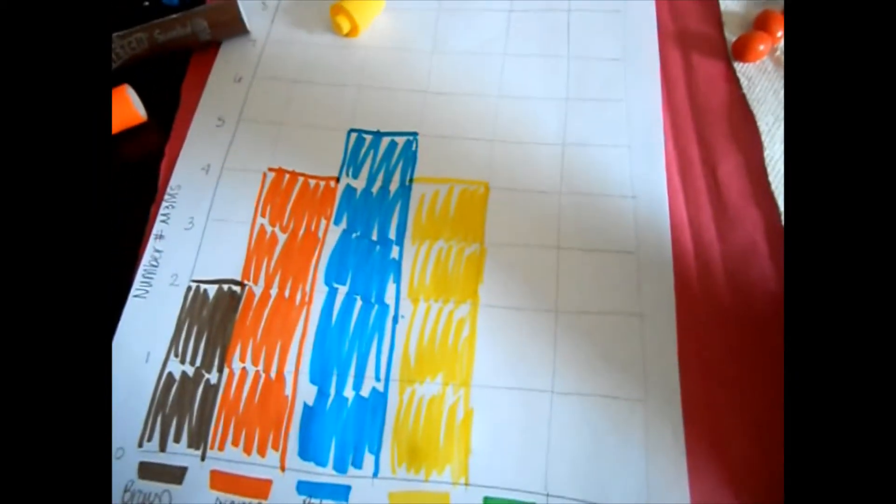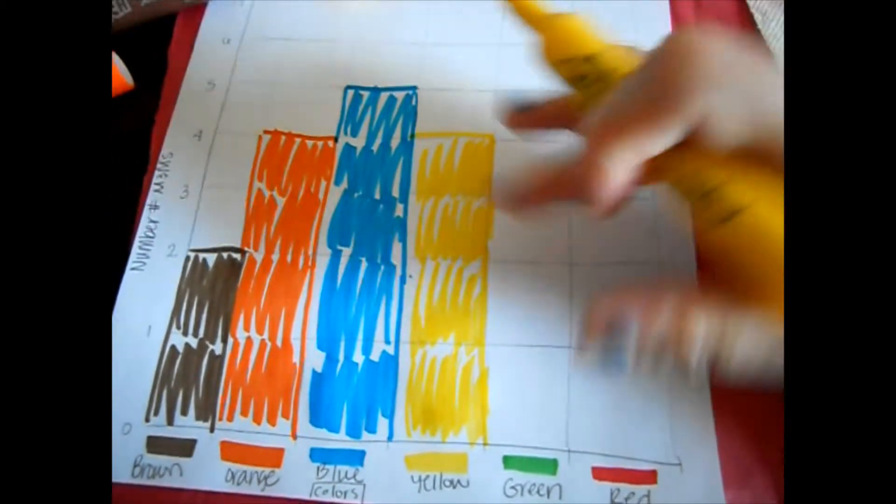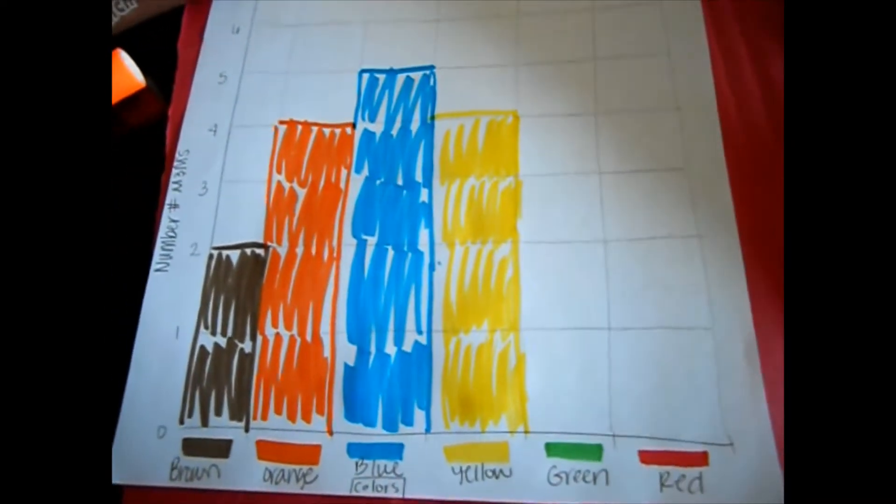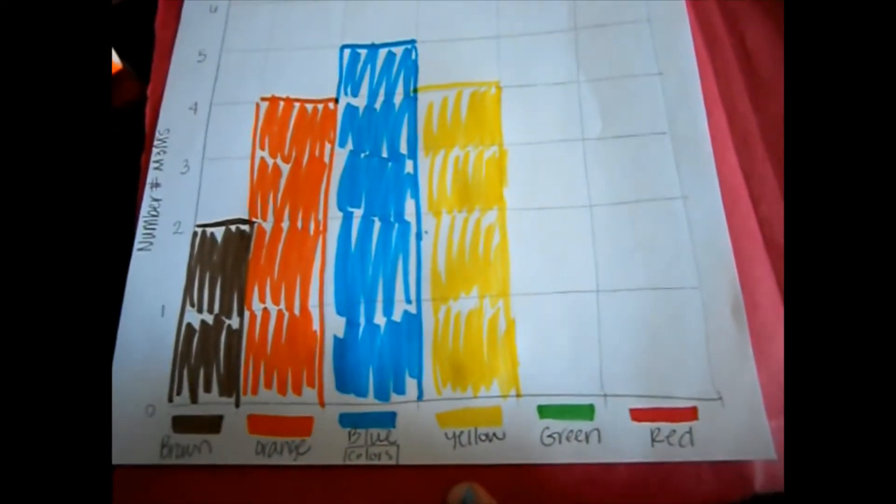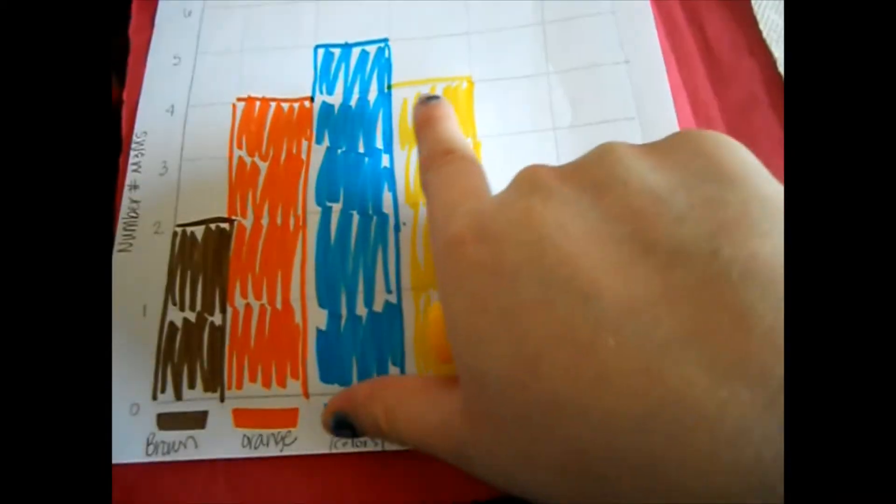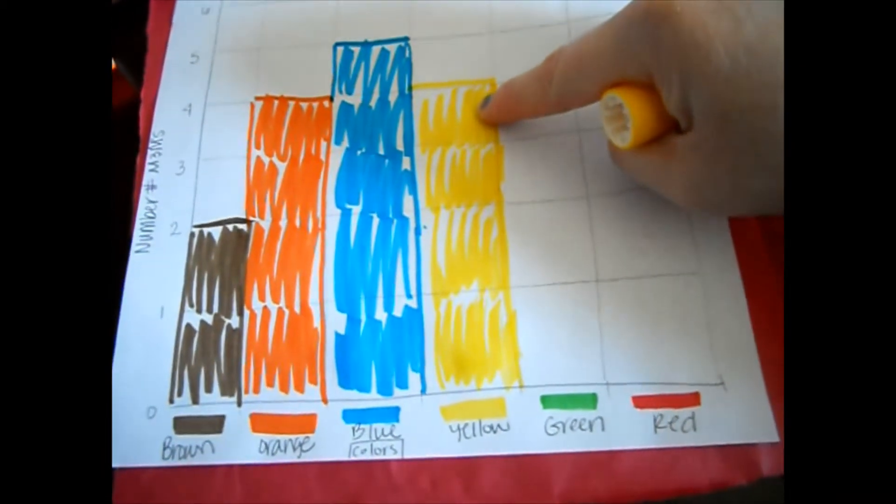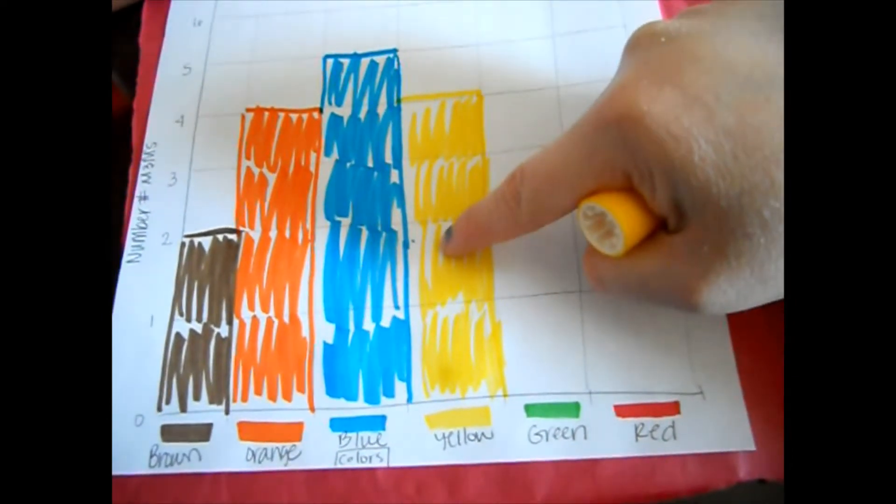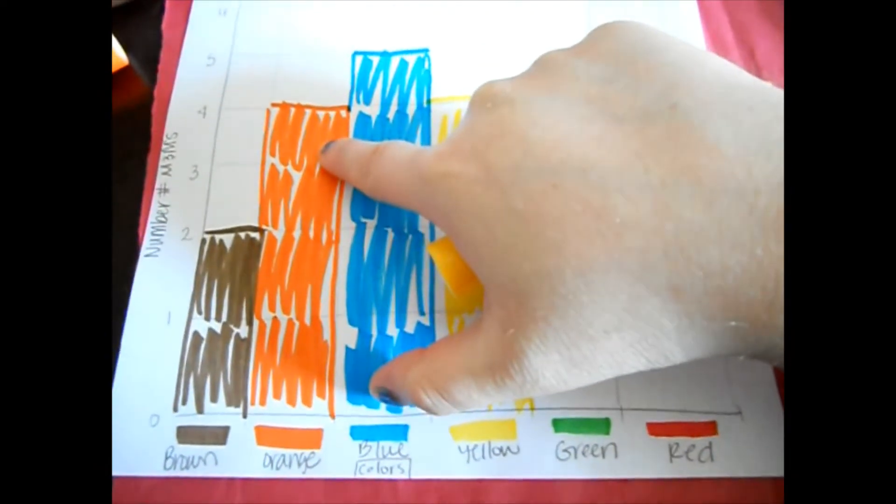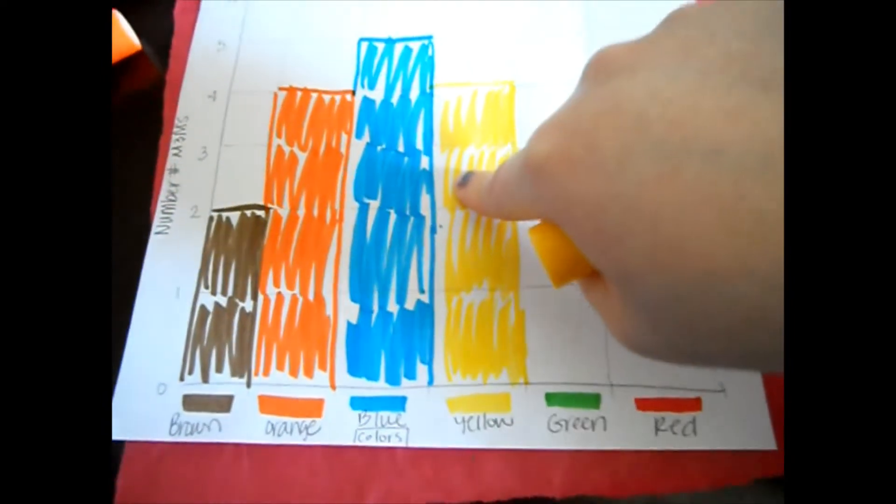Now let's take a look at the graph. You can wait till the end for all the colors to be there. Or you can just start saying, oh, what do you notice about the graph? So you can say, or help your child say, I noticed that the orange and the yellow line up to each other. So that may mean that they have the same amount. So let's count. 1, 2, 3, 4. 1, 2, 3, 4. You're right. Orange and yellow have the same amount.